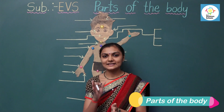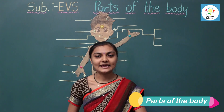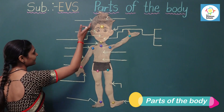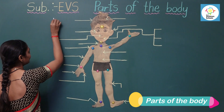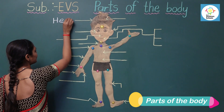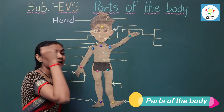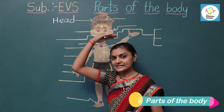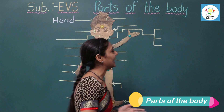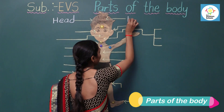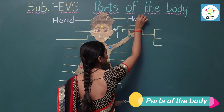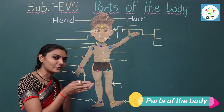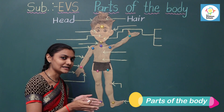I hope you already know the names of different parts of our body and their work. Let's have a small recap. This is our head — H-E-A-D. Head is the top part of our body. Head includes hair — H-A-I-R. We have hair on our head.